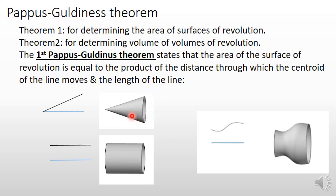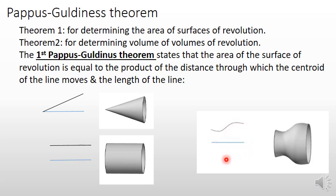There are surfaces which can be obtained by revolving a line. For example, this is a cone which can be obtained by revolving this line about this axis. Similarly, this hollow cylinder can be obtained by revolving this line about this axis for one entire rotation, that is 360 degrees. If you revolve this arbitrary curve about this axis for 360 degrees, you will be getting this type of surface.